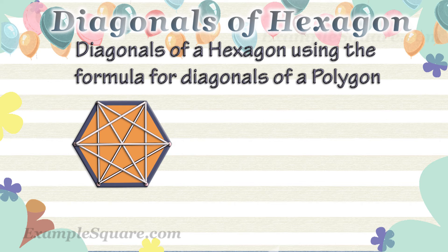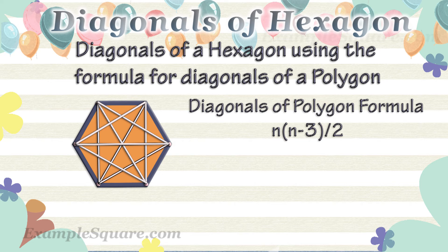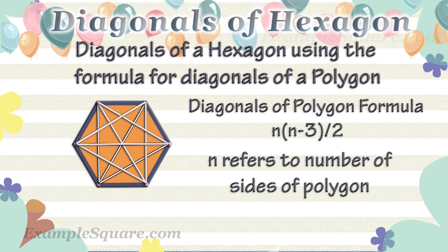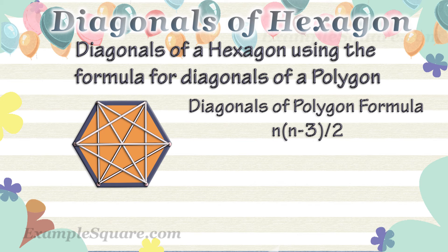How to calculate the number of diagonals of a hexagon using the formula? The formula for the number of diagonals of a polygon is N(N-3)/2, where N refers to the number of sides of a polygon. A hexagon has six sides, so here N equals six. The number of diagonals of a hexagon can be calculated as follows.